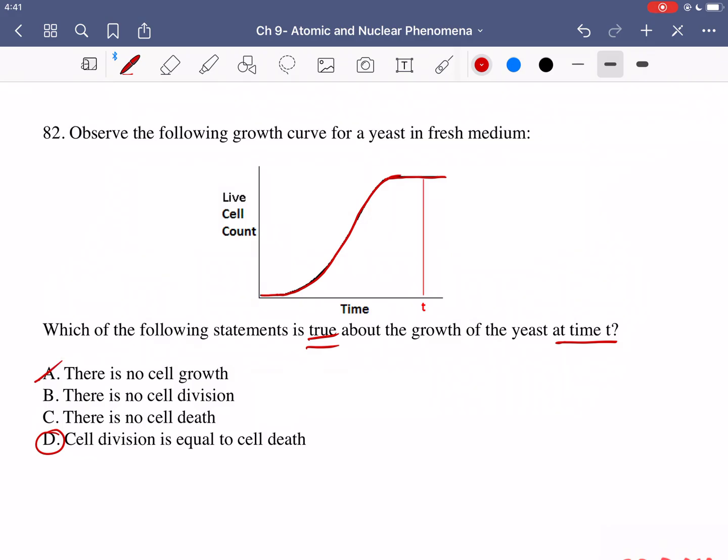Therefore we stay stagnant at that cell count. A is implying that there's no cell growth, that's incorrect. B is saying there's no cell division, that's related to cell growth, so that is also incorrect. And C is saying there is no cell death. If there was no death then this line would have kept on going upwards and the cell count would have kept on increasing. So that's not happening. Therefore C is also incorrect.